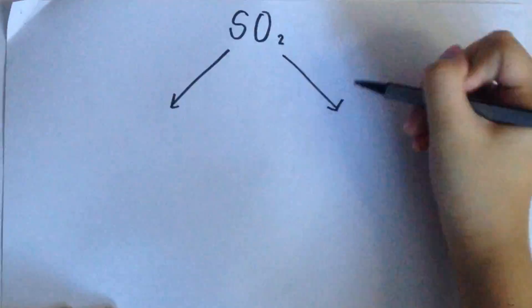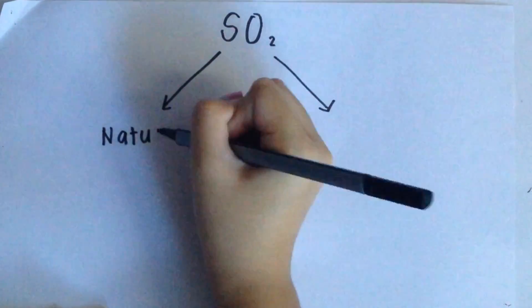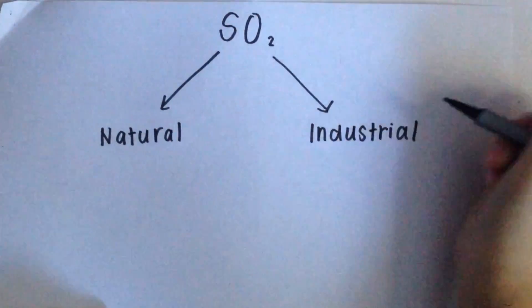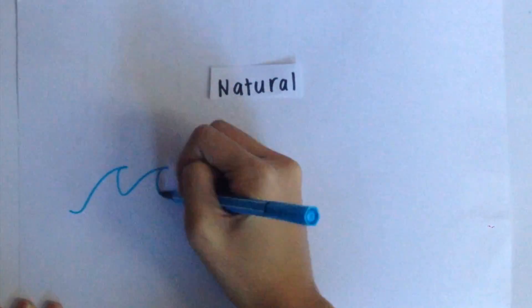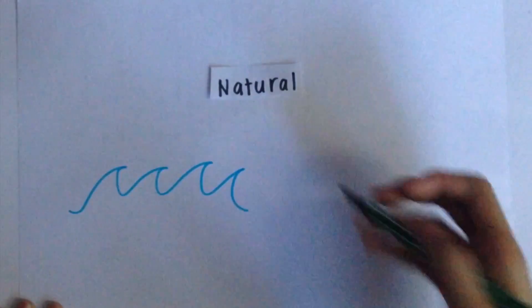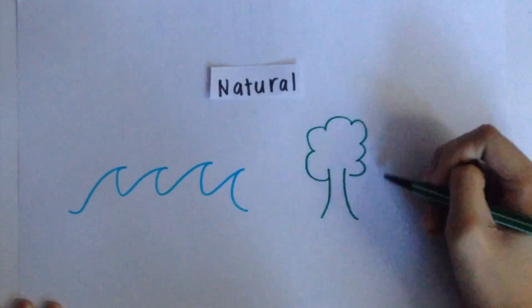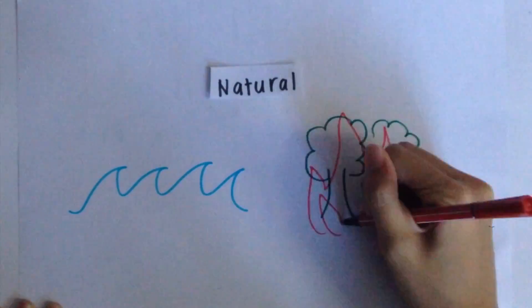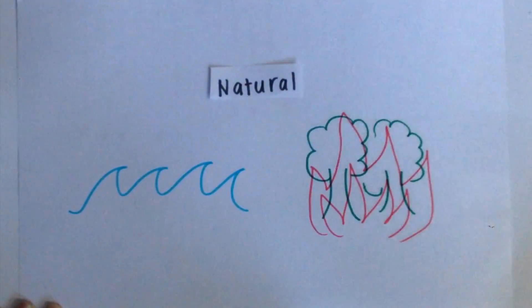Where does sulfur dioxide come from? There are two main categories: natural and industrial. Natural sources include releases from oceans, forest fires, and mainly volcanoes.